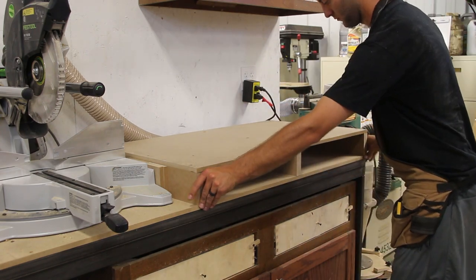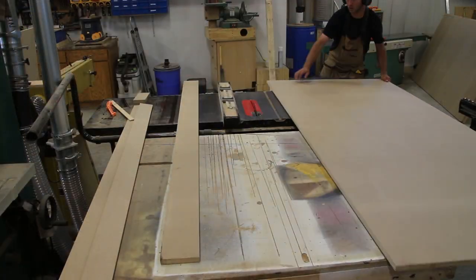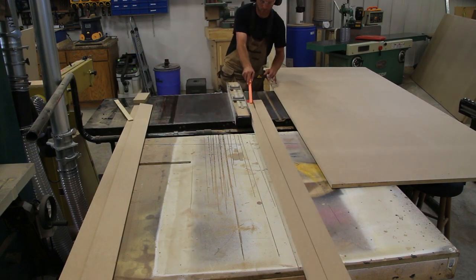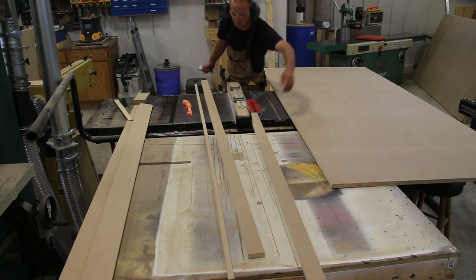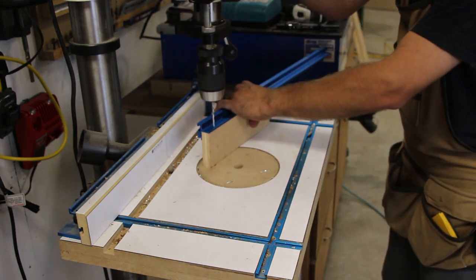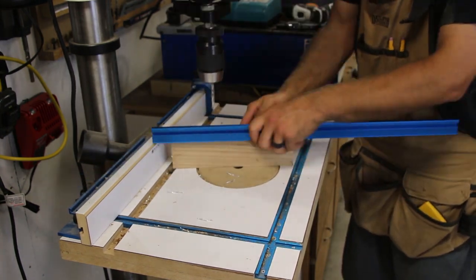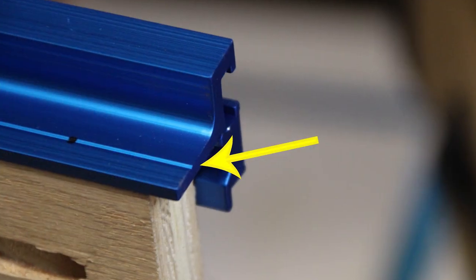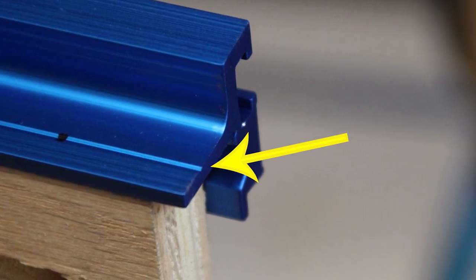With the support wings in place we can now create the fence for the Kreg Precision Track and Stop system. I rip a few long sections of three quarter inch MDF at the table saw and then head to the drill press to drill the pilot holes in the aluminum hardware. The V-notch in the aluminum extrusions helps locate the holes.